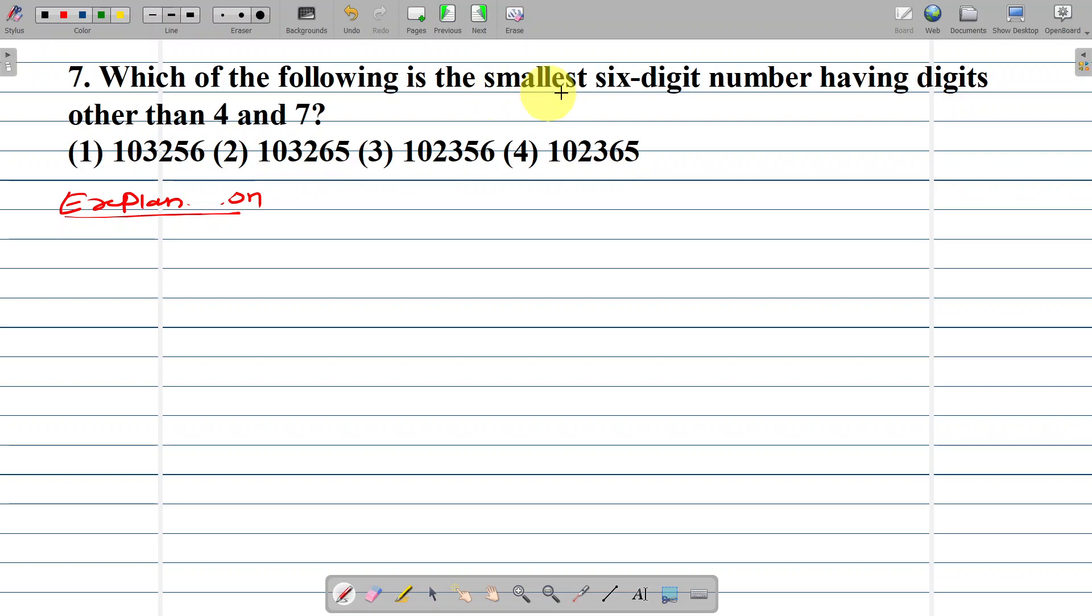We are looking for the smallest 6-digit number having digits other than 4 and 7.